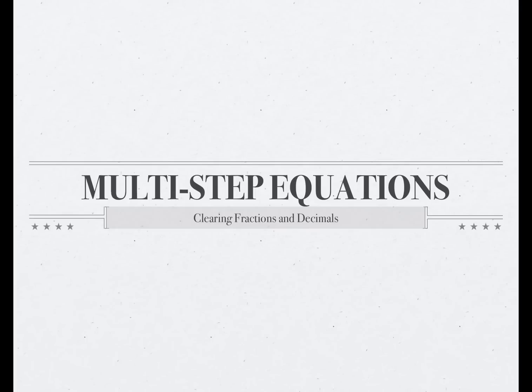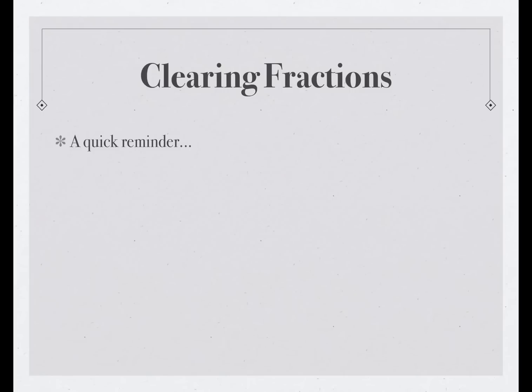We're going to start with a little review of how to multiply integers times fractions. So, first, if we have 5 times 3/4, the way to do the multiplication is to multiply the 5 by the numerator of the fraction, 5 times 3 over 4, and the result is 15/4.